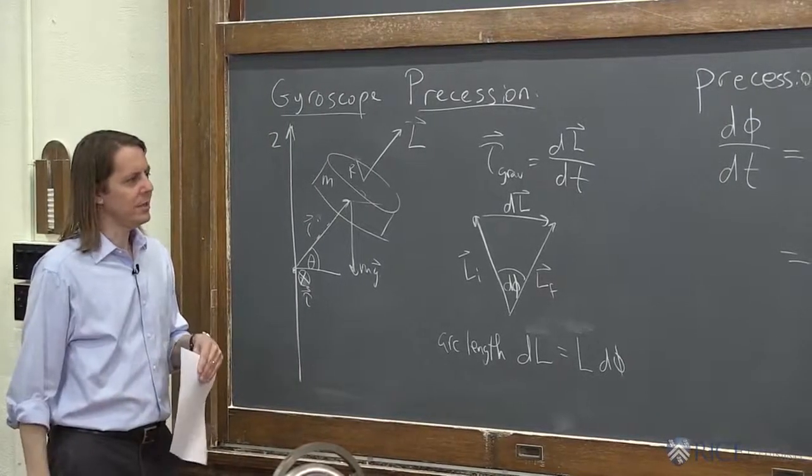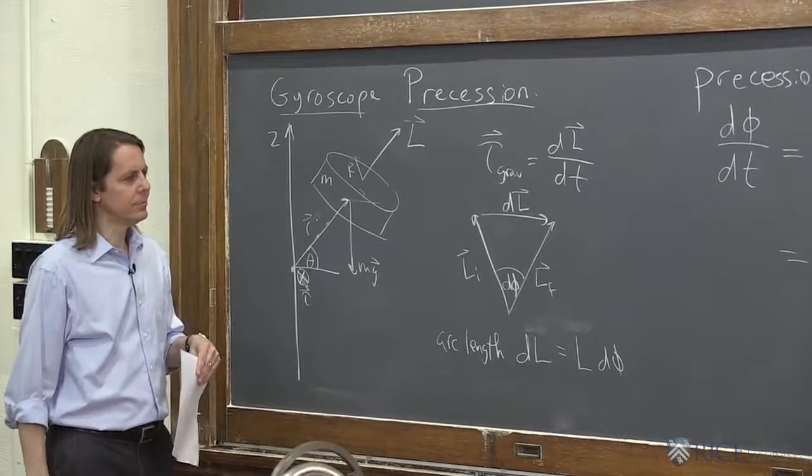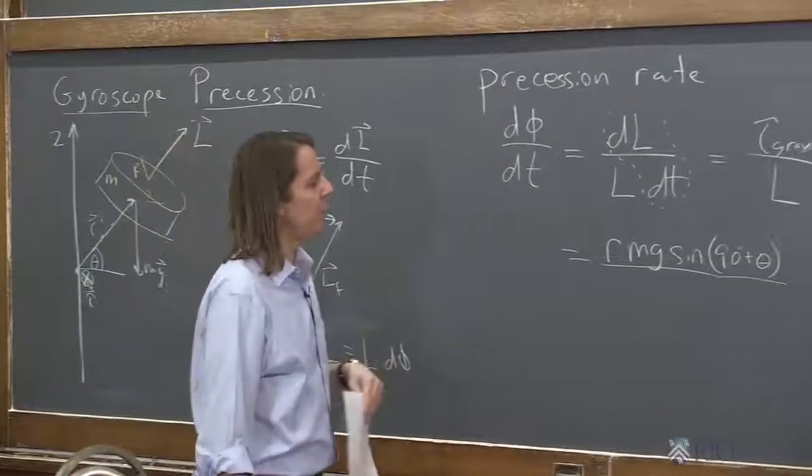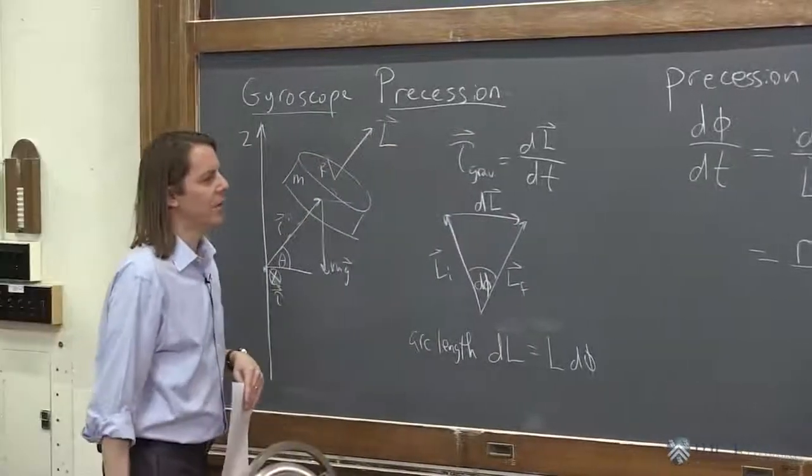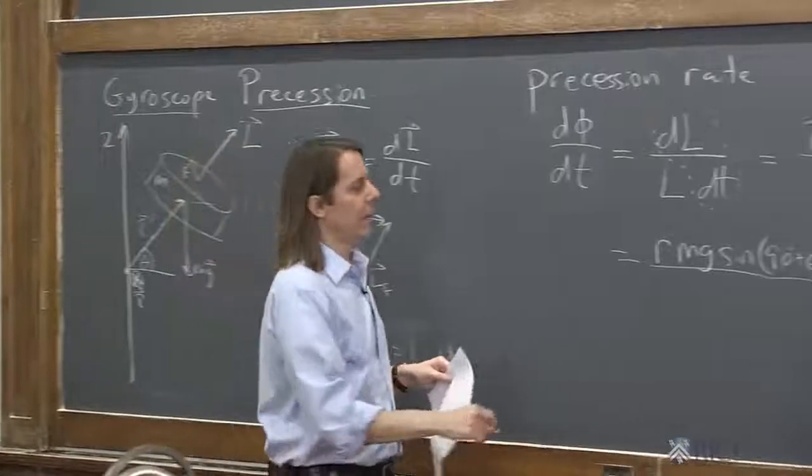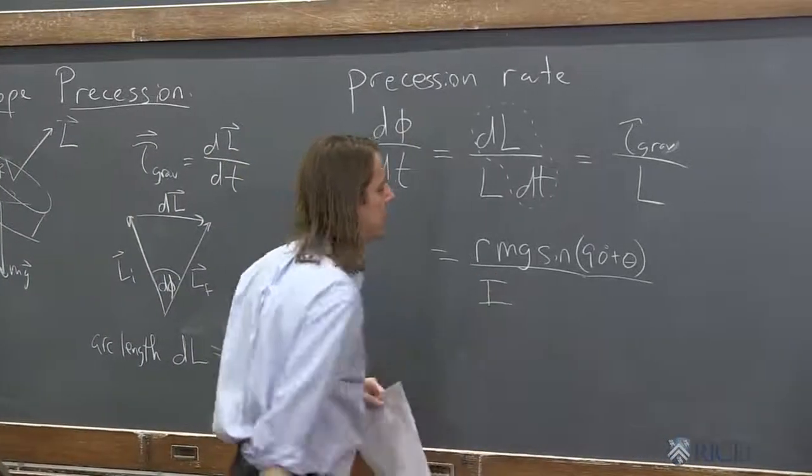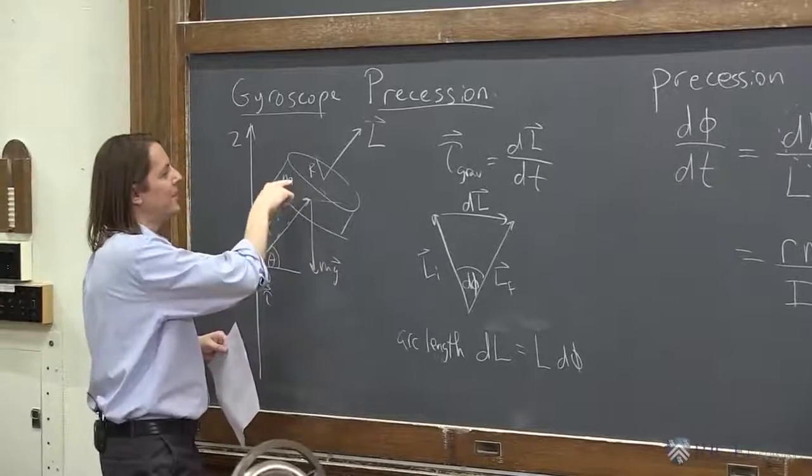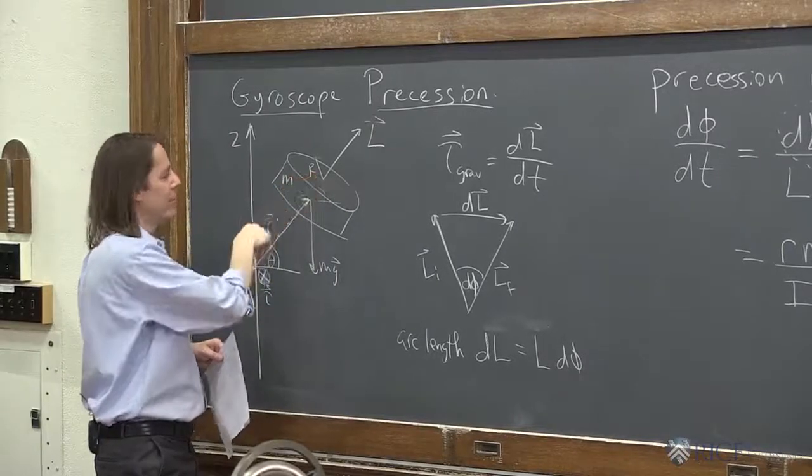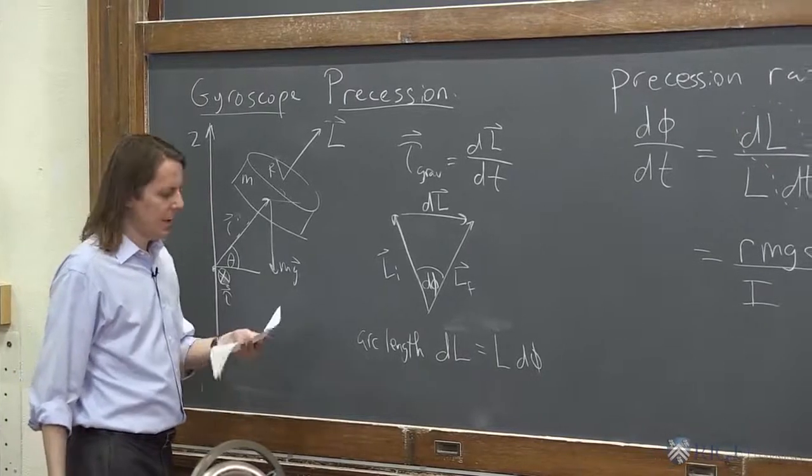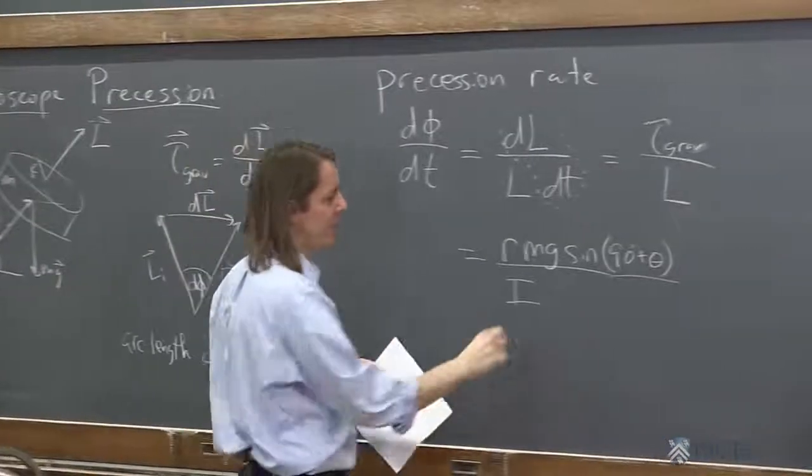So that's the torque for this problem. And then we need L for this problem. And what is L? L is I omega. So this is a disk. It has some moment of inertia I, which we could plug in and say it's 1 half mr squared. But then that's a different r from that r, so it's not worth it. So we'll just call it I. It's a disk with some moment of inertia I. And times omega. L is I omega.